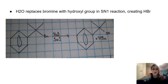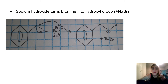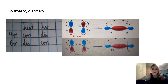H2O replaces bromine with a hydroxyl group in an SN1 reaction, creating HBr. Sodium hydroxide turns bromine into a hydroxyl group plus sodium bromide. Conrotary and disrotary: conrotary has the molecules trans to each other, and disrotary has the molecules cis to each other.